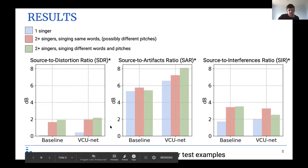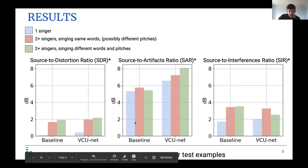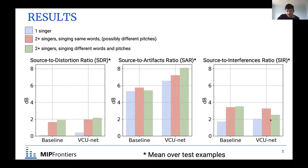For cases with multiple singers, we improve the source-to-distortion ratio and source-to-artifacts ratio, but the source-to-interference ratio decreases. This means the additional information makes the separated voices less degraded, but we pay for this by letting through more other instruments — more interferences. This is a common trait of masking-based source separation.